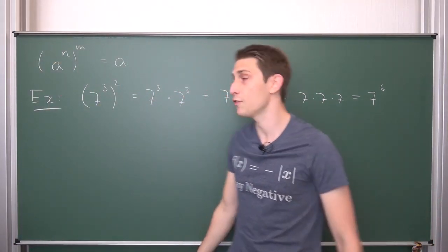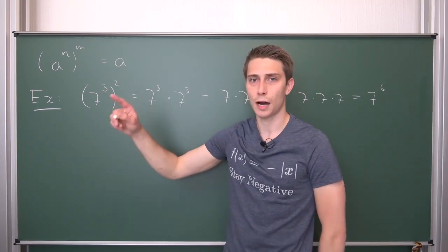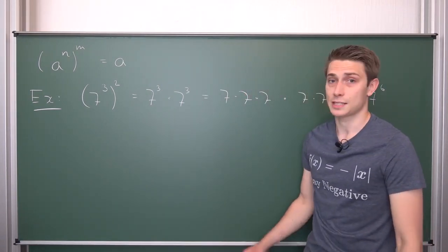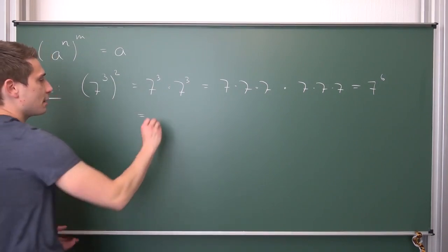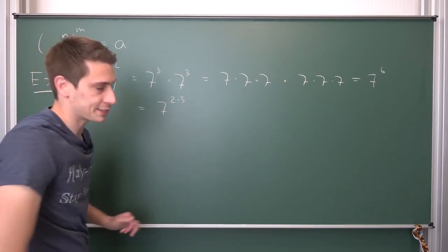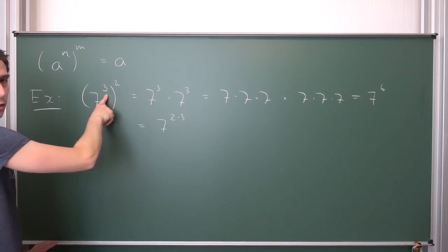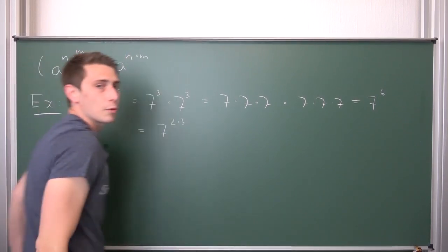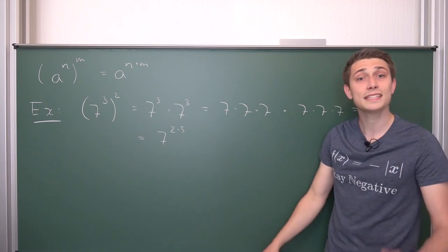So a is going to stay where it is — nothing changes there. Now we only need to ask how 3 and 2 are connected such that we get 6. Well, 3 times 2 is nothing but 6 — it's just the prime factorization. So 7 cubed squared is nothing but 7 to the 2 times 3 power. Comparing exponents: n was 3 and m was 2, and n times m gives us the result. So when we exponentiate an exponential, we simply multiply the corresponding exponents together.